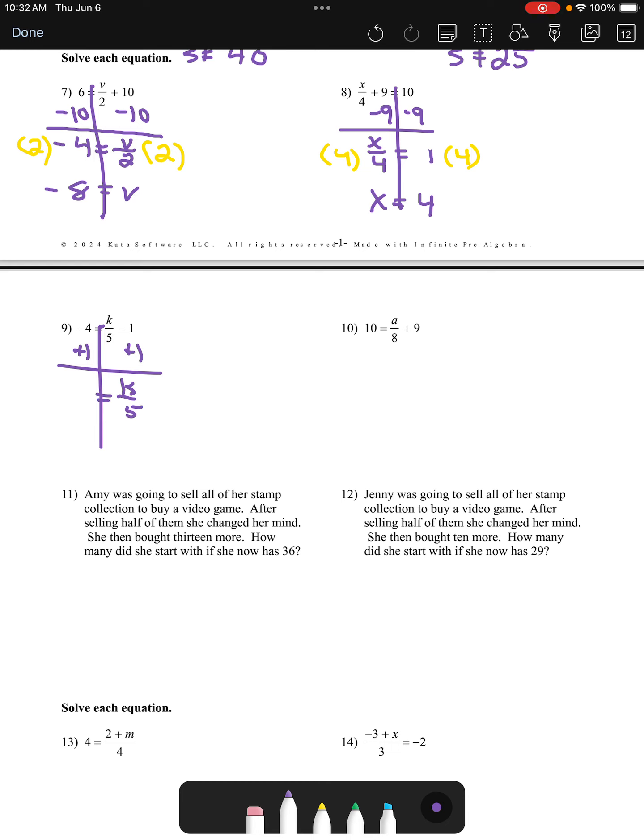In number 9, we'll begin by adding 1 to both sides so that our k over 5 is alone, and negative 4 plus 1 is negative 3.